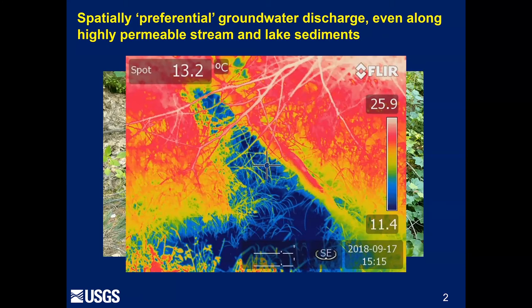Thankfully there's a thermal signature in this case — colder groundwater coming into warmer surface water. This is an infrared image, but this is the type of data we'd like to pick up with a cable laid out along the bottom of this pond. Most of the data I'll show you today are from streams and rivers.